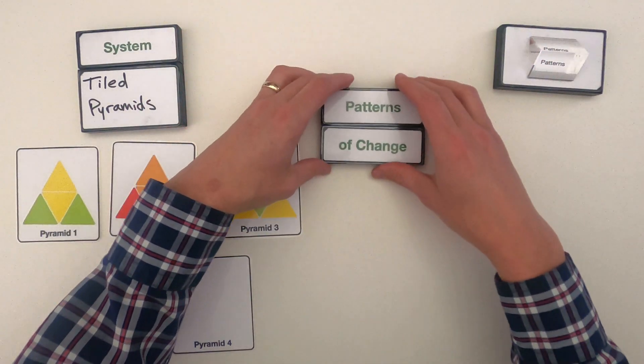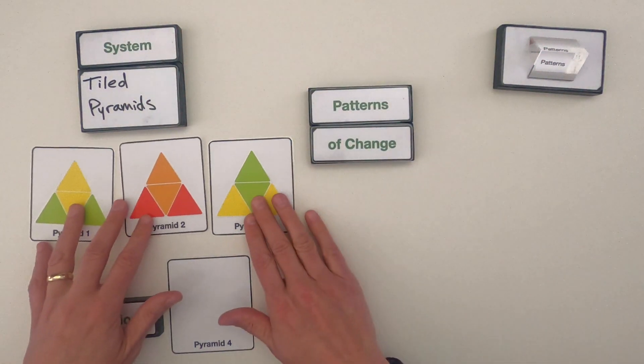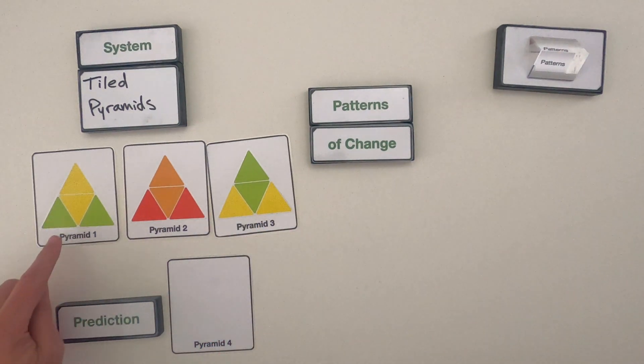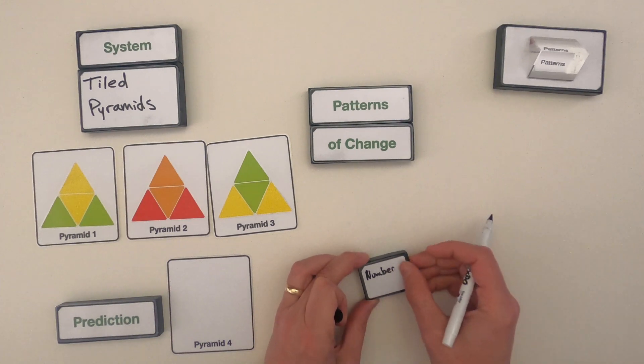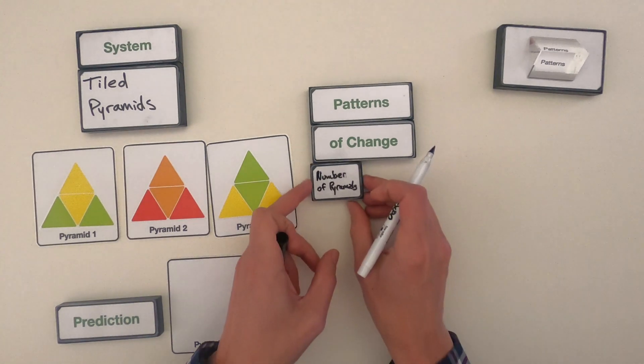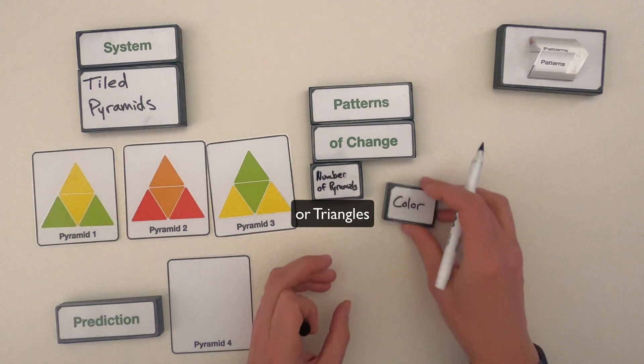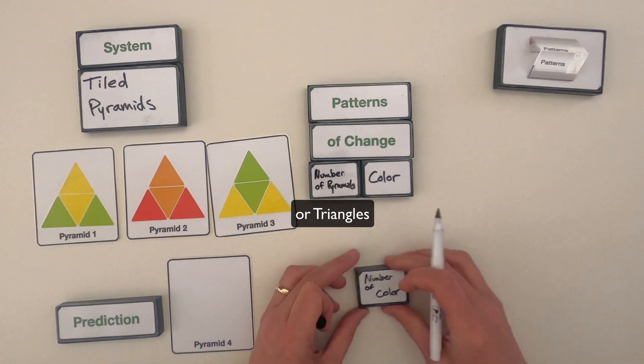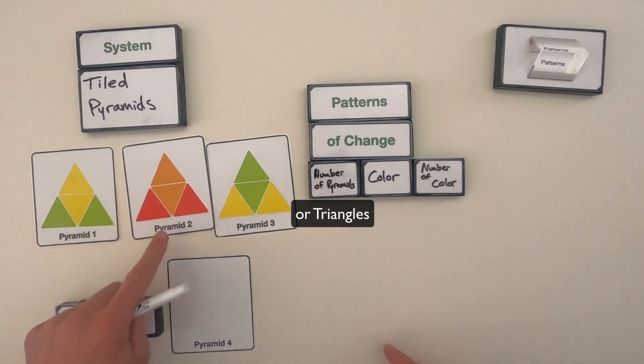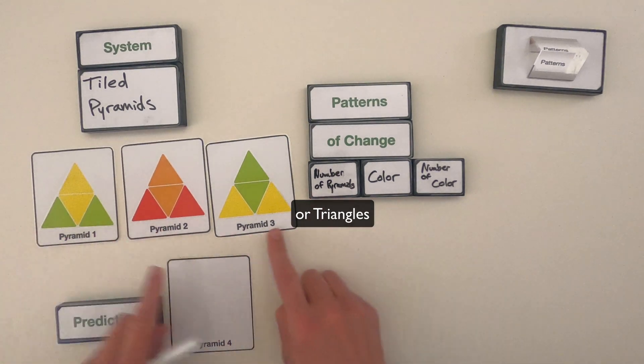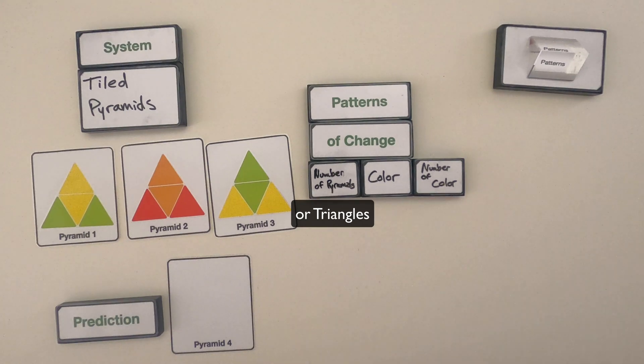Now we should start looking at patterns of change. So what patterns of change do we see as we go from pyramid 1 to 2 to 3? First thing I'm going to do is just organize some things that I see. So I'm interested as it changes in the number of pyramids, the color as we move from one pyramid to the next, and also the number of each color.